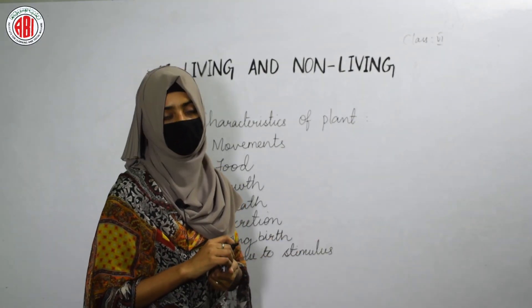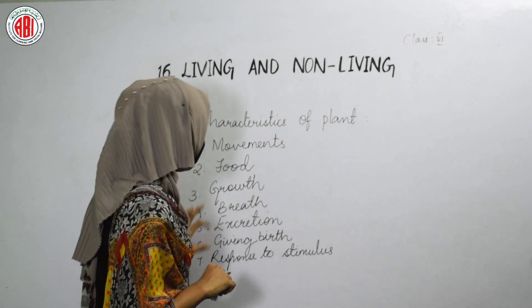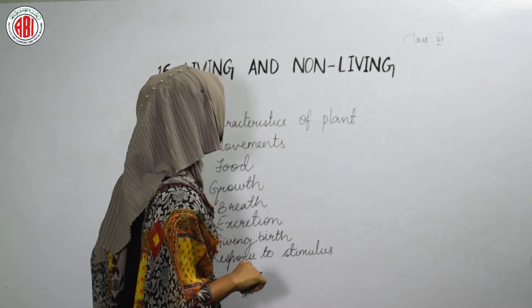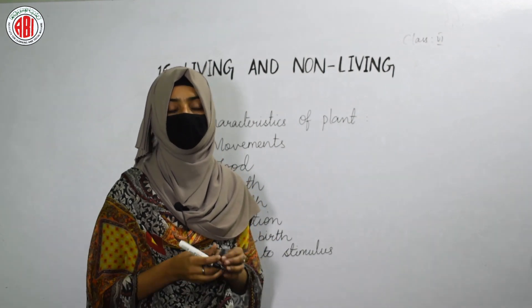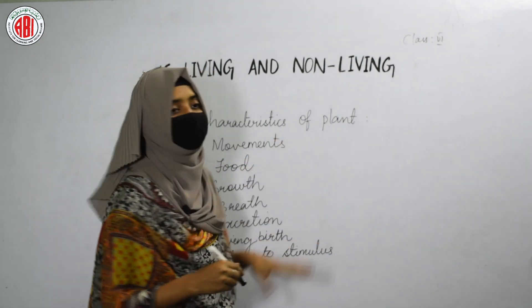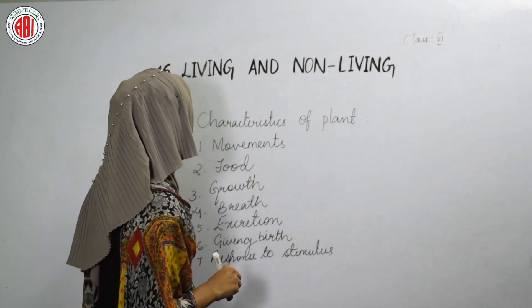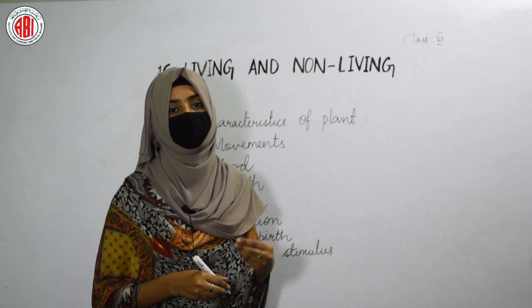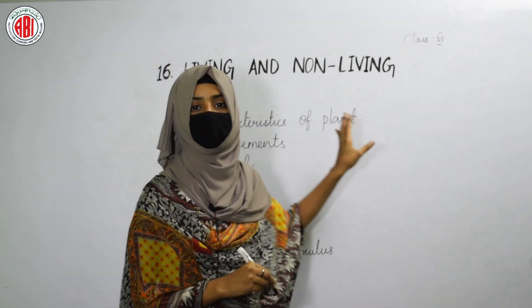Now let us discuss the characteristics of plants. The characteristics of plants include movement, food, growth, breathing, excretion, giving birth, and response to stimulus. Based on these characteristics, the plant can be categorized as a living thing. We have already discussed that movement, taking food, growth, excretion, and breathing are the processes that take place in a living organism, so we can call the plant a living thing.